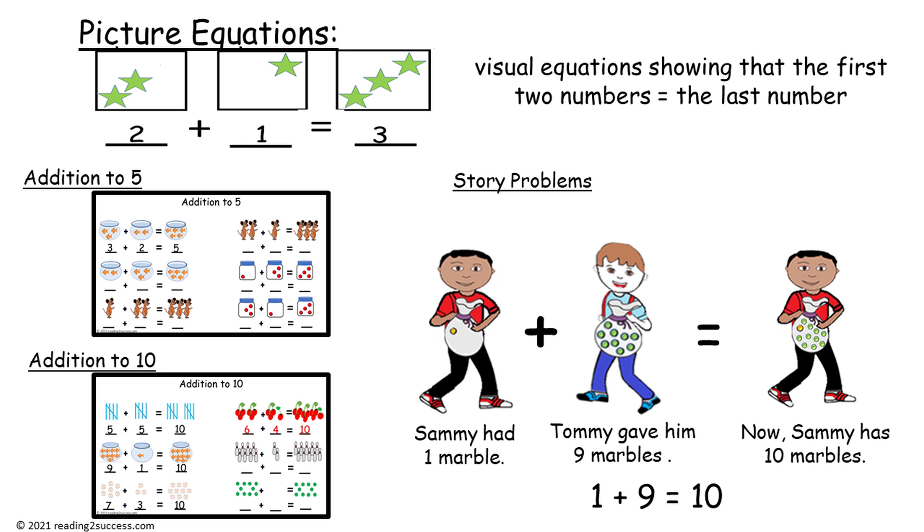Our second area of instruction will be picture equations, visual equations showing that the first two numbers equal the last number. We will begin with activities of addition to five, then addition to ten, and then move into story problems, just like the one we see.